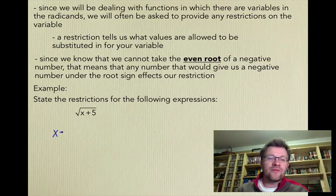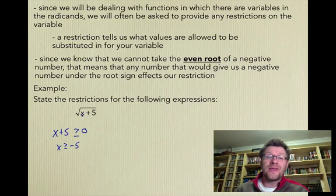For example, it says state the restrictions for the following expressions, the square root of x plus 5. We know that x plus 5, whatever is underneath that root sign, cannot be negative. So it has to be greater than or equal to 0. We just solve that little inequality, and our restriction is that x has to be greater than or equal to negative 5. Because if we plug in anything greater than negative 5, like negative 4, we will get a number that we can take the square root of. If we plug in anything less than negative 5, we're going to get a negative number.